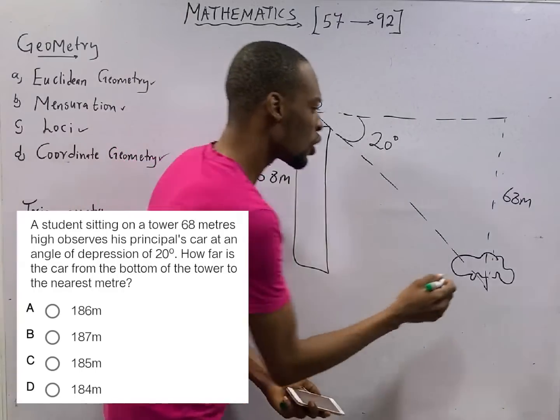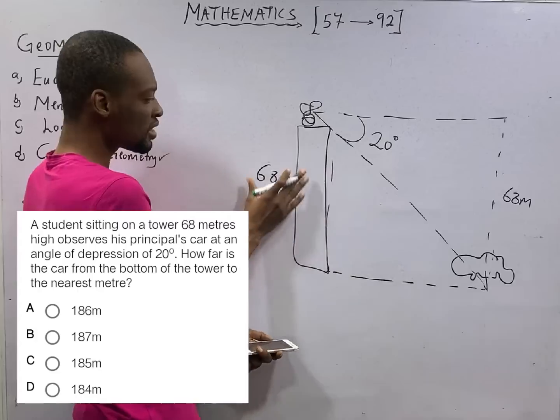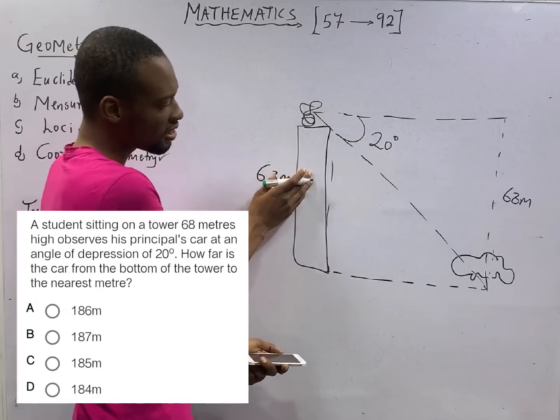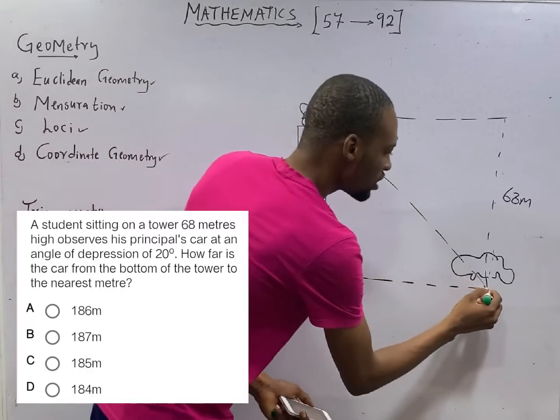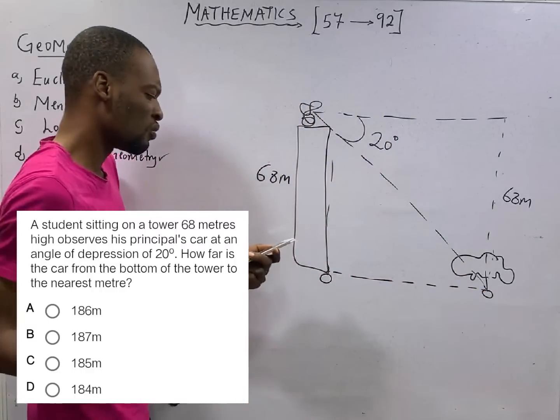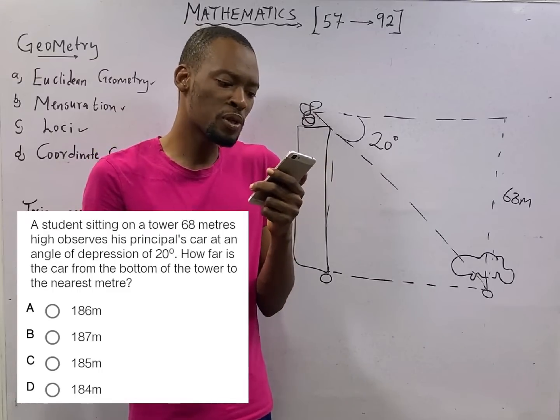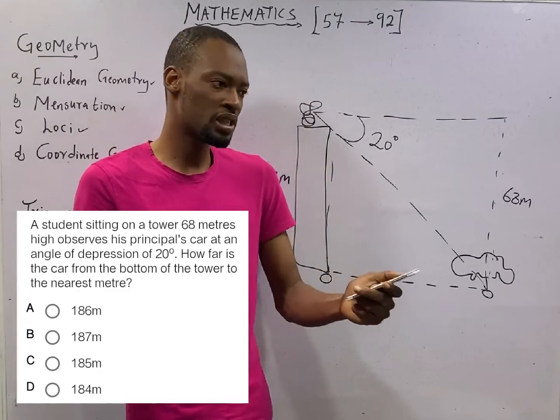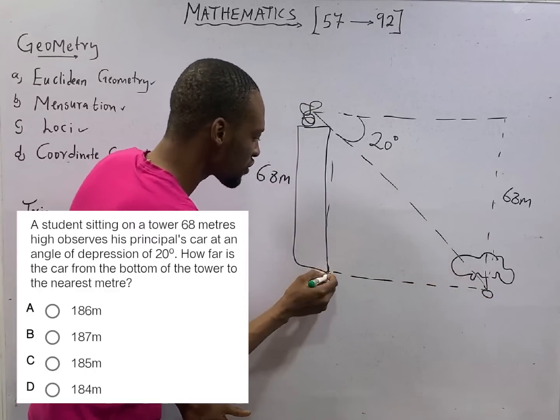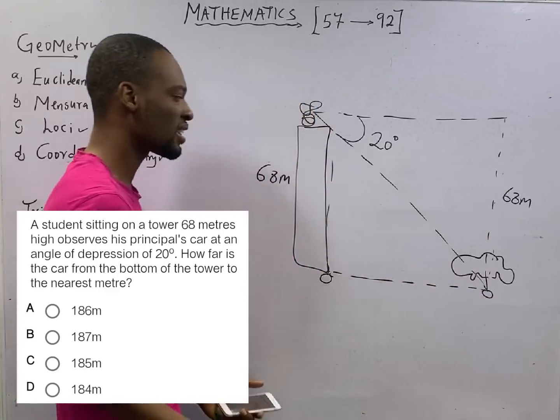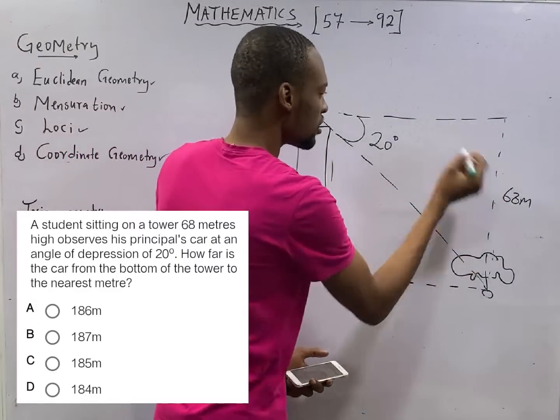You can choose to complete this triangle in two ways. You can choose to just complete here like this. And this height, 68 meters, is the same thing as here, 68 meters. Or you choose to complete it like this. Then here is the distance from the observer to the car. We are asked for what? How far is the car from the bottom of the tower to the nearest meter? This is the bottom of the tower and this is the car.